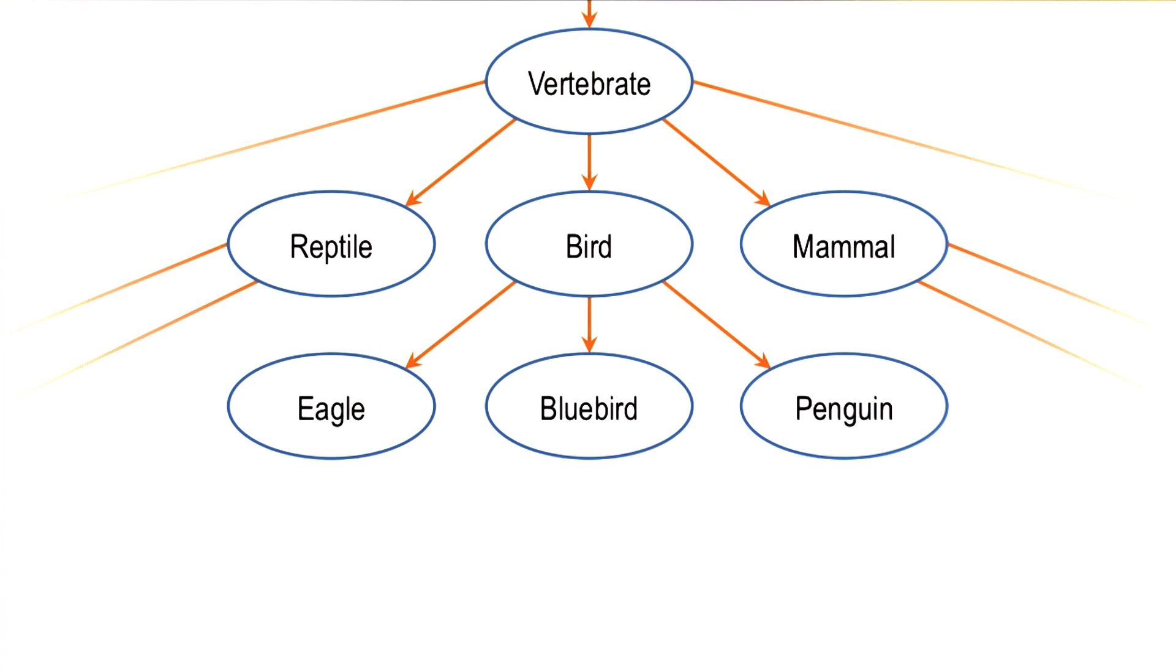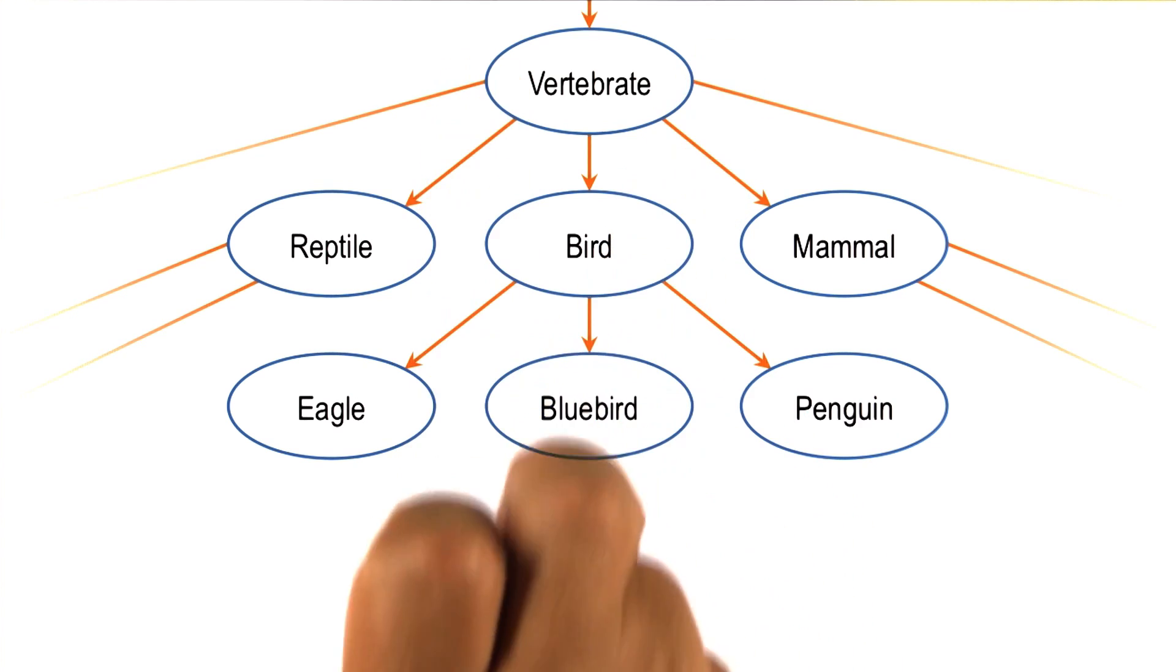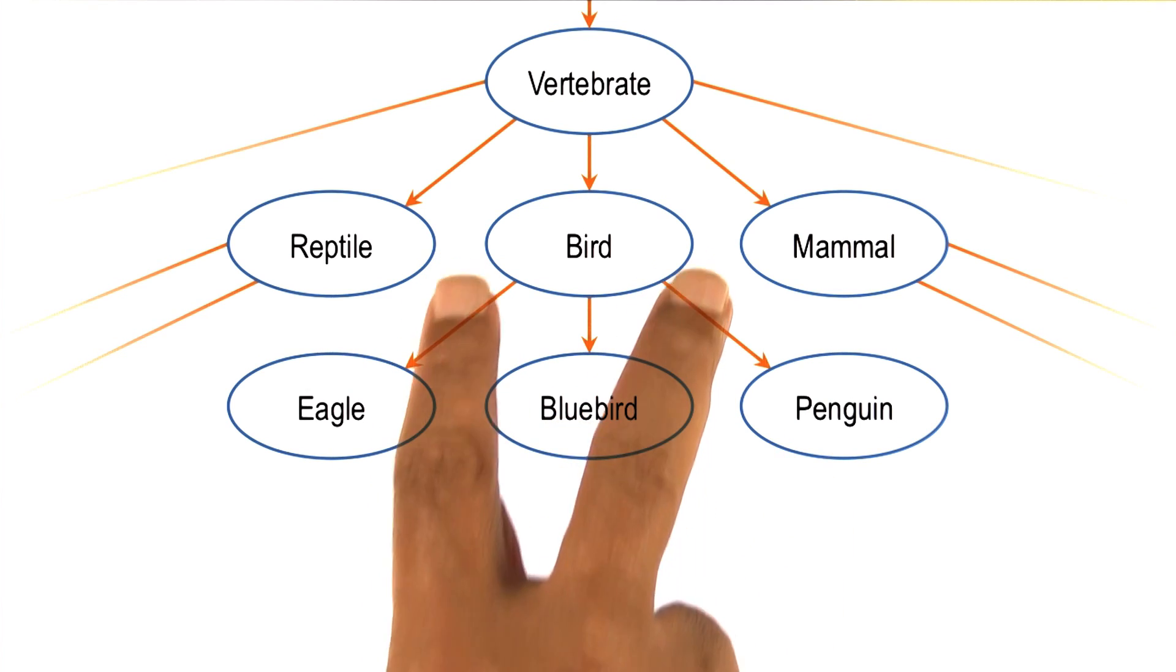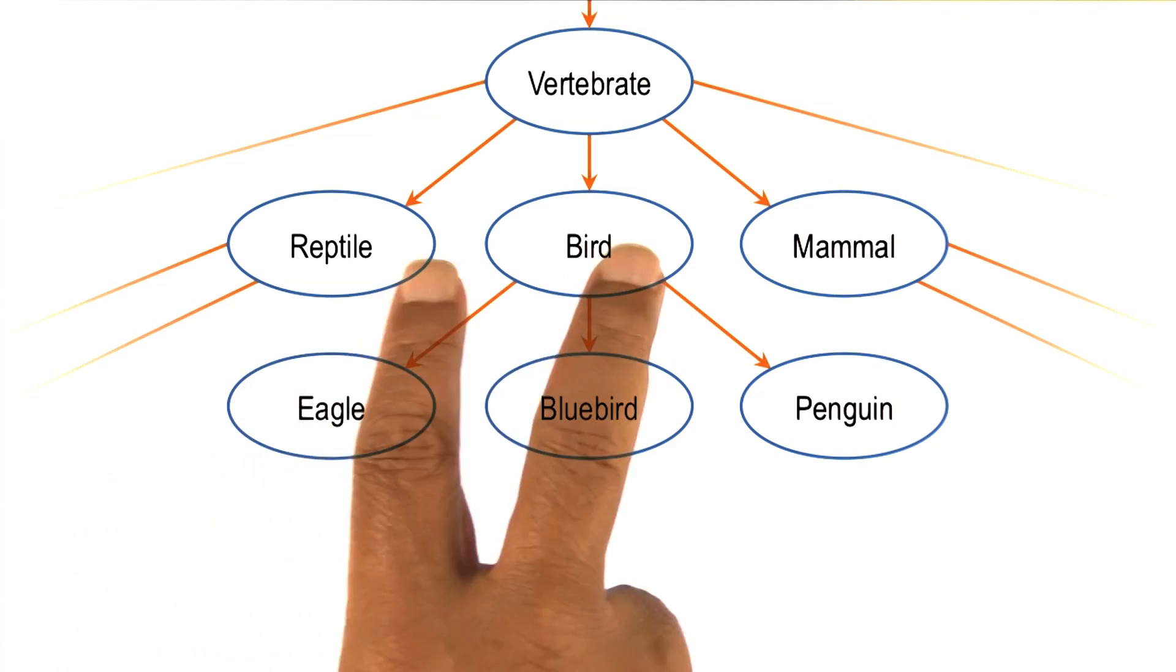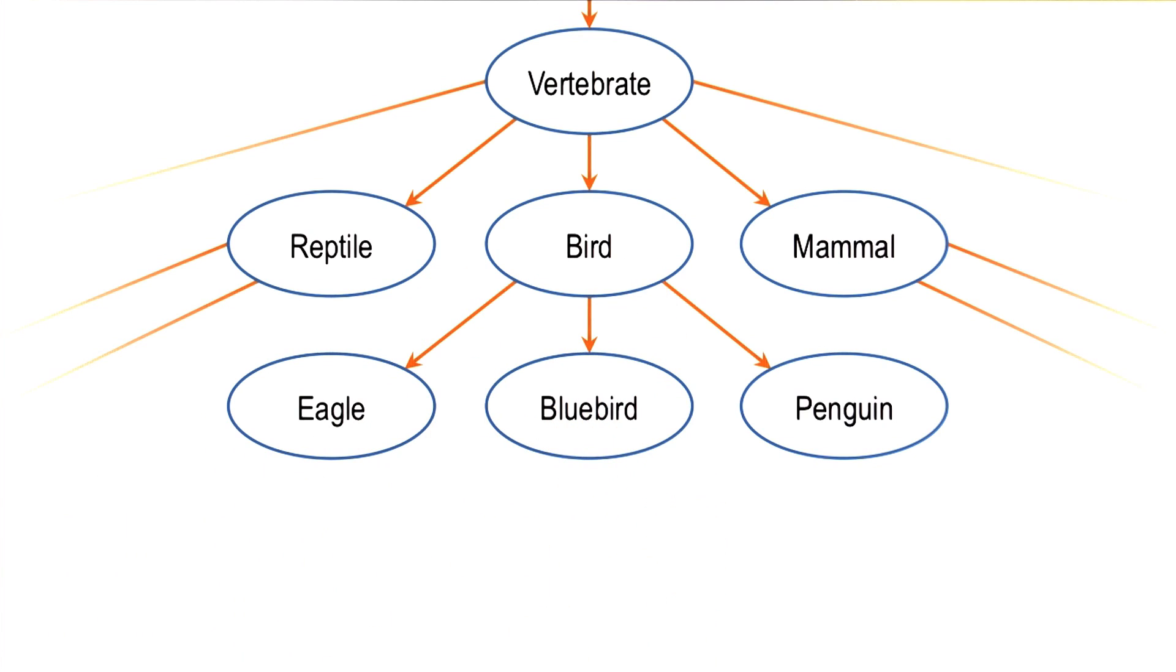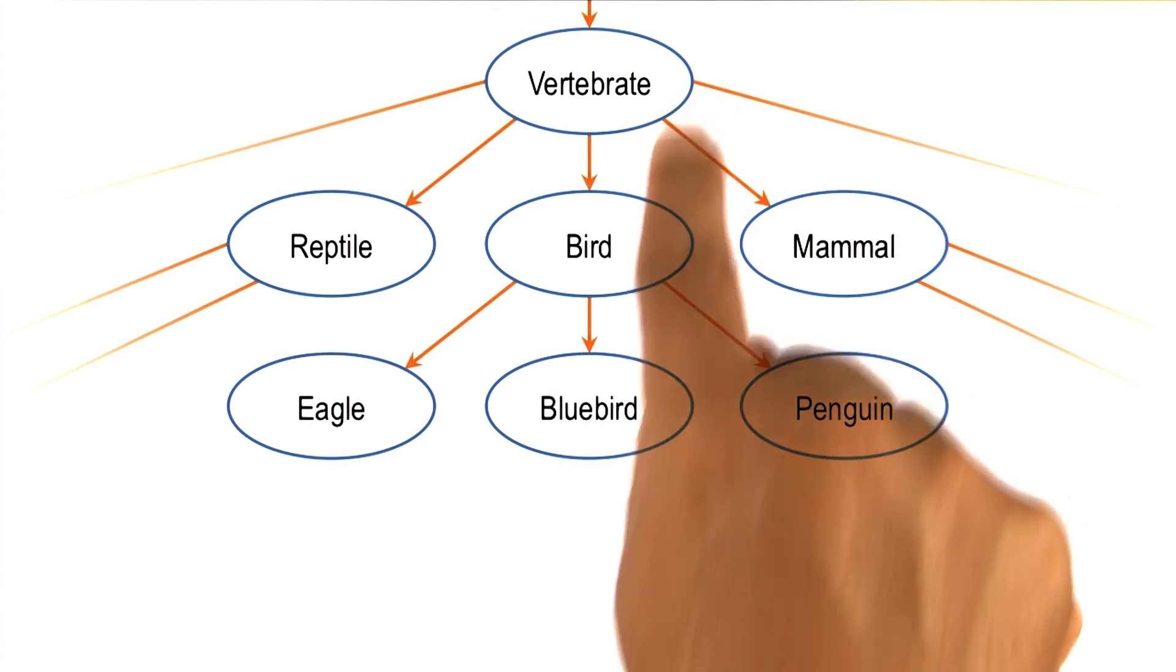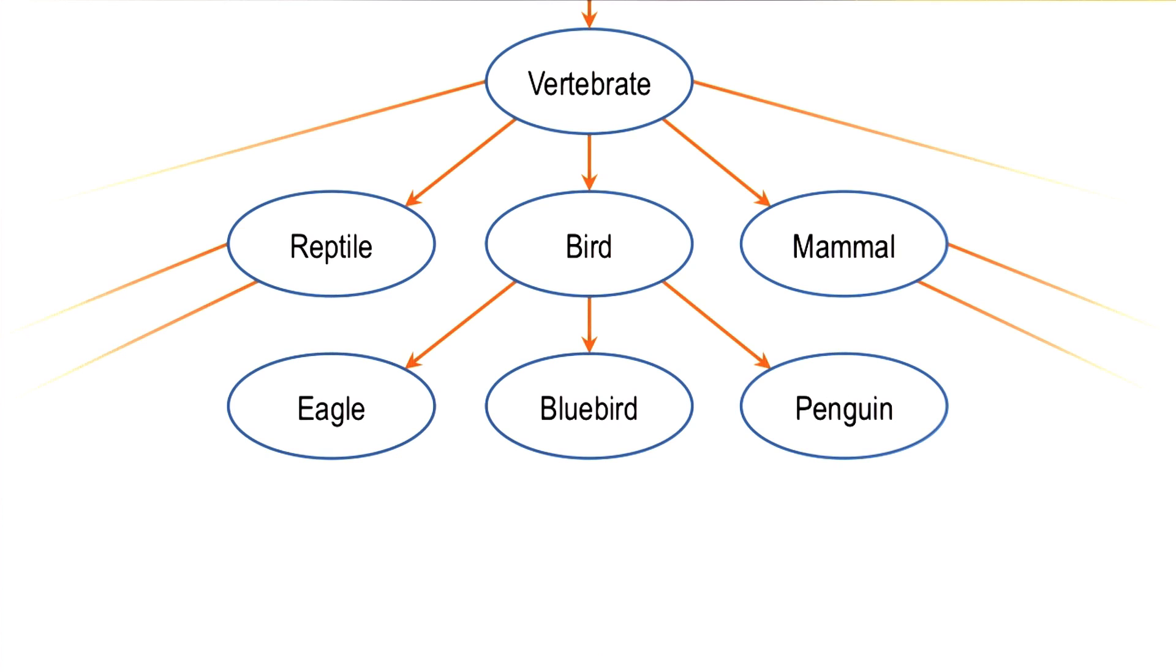Even among humans, imagine, for example, what happens when a scientist discovers a new kind of species. Then the scientists will begin from the top and say, well, is it a vertebrate? Where exactly in this tree should I put this species? Is it a bird? Is it closer to an eagle? Should I put it closer to a bluebird, and so on? So classification of this kind often has a top-down, establish, refine, establish, refine character to it.